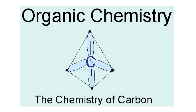Hello students. In this video you're going to test yourself on how much you know about the naming of alkanes. Alkanes are saturated hydrocarbons having single bonds, and the general formula is CₙH₂ₙ₊₂.